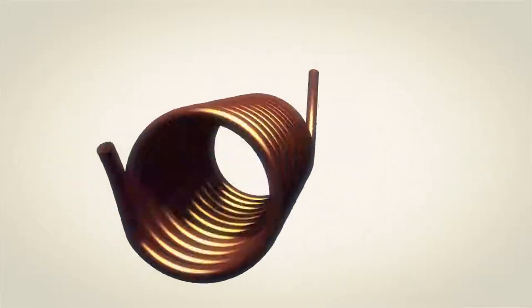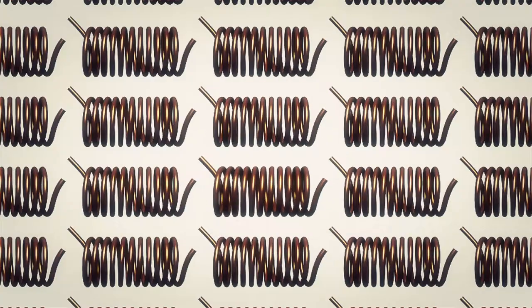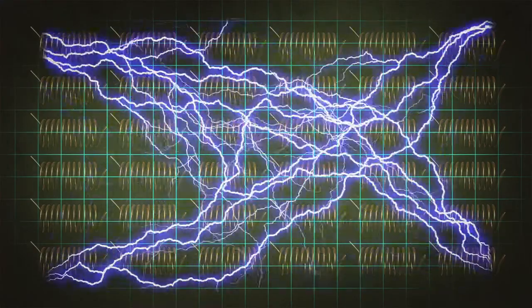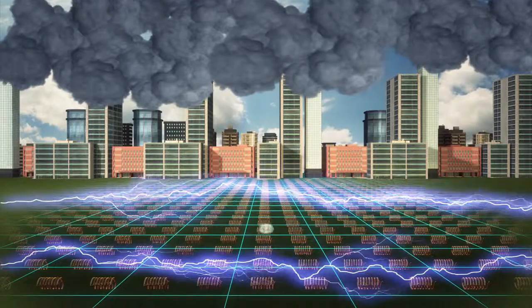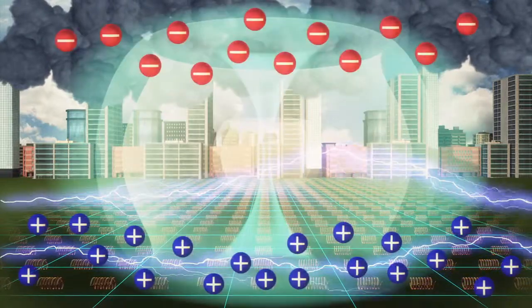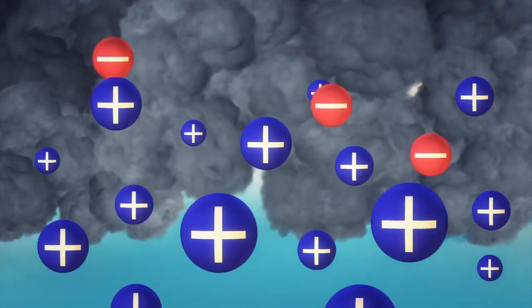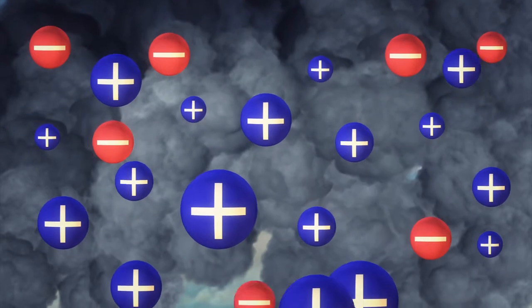The system uses copper coils buried underneath grass to generate a weak electromagnetic field. Once an electric current is passed through, the static electricity from generated ions attracts smog components in the air and pulls them down to the ground.